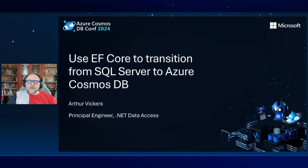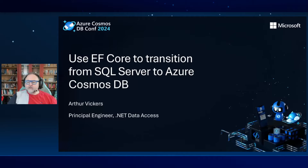My name is Arthur Vickers. I'm a Principal Engineer on the .NET Data Access team at Microsoft, and I'm going to talk to you today about using EF Core to transition an application that's using a traditional relational database like SQL Server or Azure SQL to a document database, in this case Azure Cosmos DB for NoSQL. Let's get right into it.